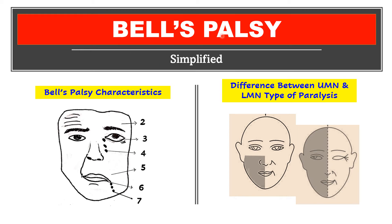This video is on Bell's palsy. We will see what exactly happens in Bell's palsy, which nerve is involved, which muscles are paralyzed, and what are the signs and symptoms. We will also look briefly at the differences between the upper motor neuron and the lower motor neuron type of paralysis of the facial nerve.